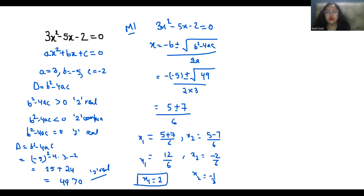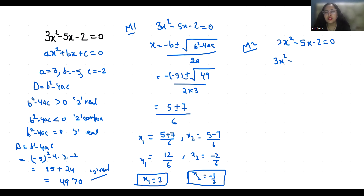Now Method 2: I am going to use the middle term splitting method. We can write minus 5x as minus 6x plus x, since 3x times minus 2 gives minus 6 and minus 6 plus 1 equals minus 5. Taking 3x as common from the first two terms gives 3x(x minus 2).